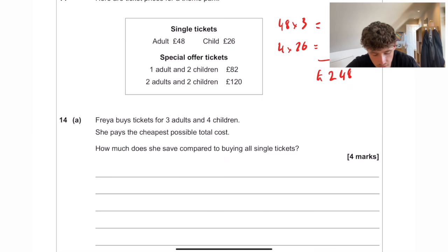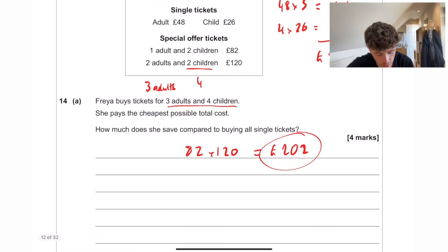But with the deal, as you can see, two adults and one adult is going to make three adults. And in total, four children. So that is exactly what we need. So 82 add 120 is going to equal £202. So the special offer tickets is going to be the better deal. How much does she save? We have to do 248 take away 202, which is going to equal £46.